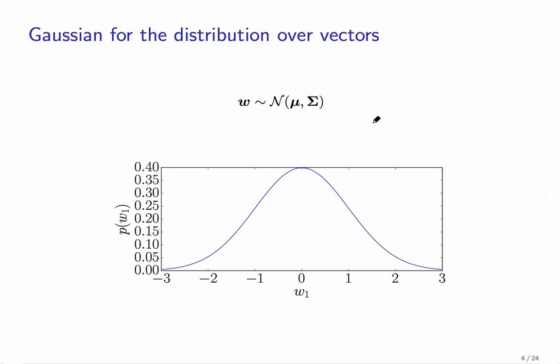Remember, if we sample a large number of data points from that distribution, the histogram will look a lot like the probability density. Here we can see an example for a one-dimensional Gaussian with mean zero and sigma one.